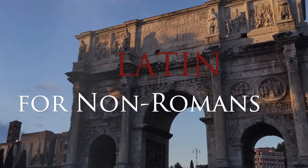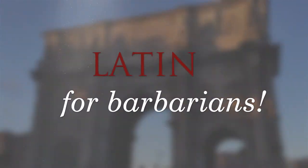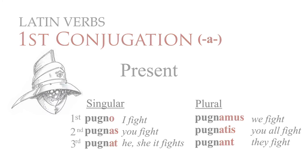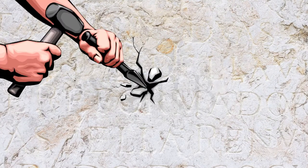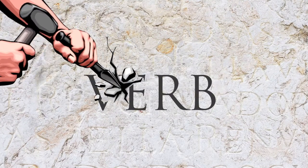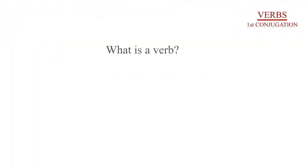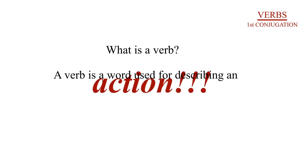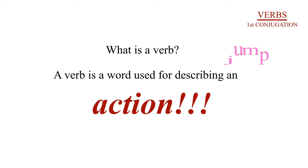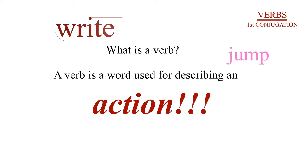Welcome to Latin for Non-Romans, or as I like to call it, Latin for Barbarians. The first conjugation. The verb. But what is a verb? A verb is a word used for describing an action. We call these doing words.